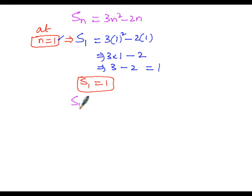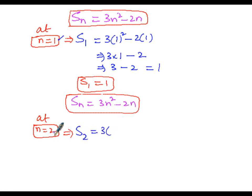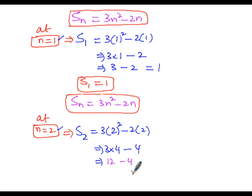Now at n equals 2, S(2) equals 3 into 2 squared minus 2 into 2, which gives 3 into 4 minus 4, that is 12 minus 4 equals 8. So S(2) equals 8.